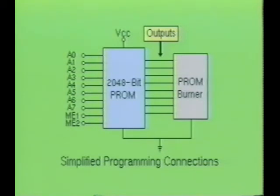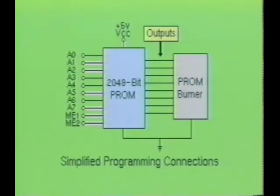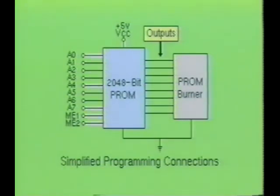To program a logic zero, the following procedure is generally followed. First, a voltage of 5 volts must be applied to the VCC input. Next, select the word to be programmed using address inputs A0 to A7. Third, apply a logic 1 to either or both of the enable inputs — in this example, we applied a high at both enable inputs. Fourth, apply the high energy programming pulse to the outputs where the low bit levels are desired. Then advance to the next output and/or word, programming only one bit at a time. This sequence is continued until the entire PROM device has been programmed.